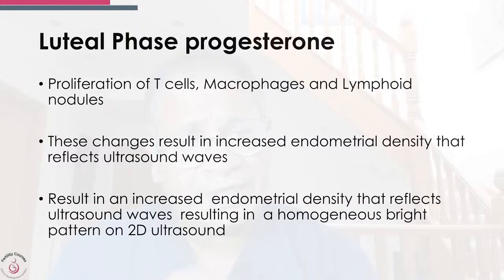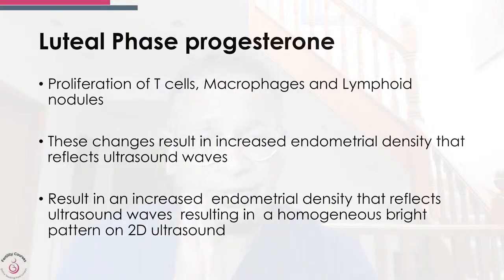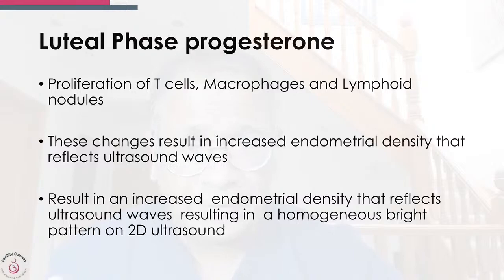Progesterone has a very interesting effect on the endometrium. It starts preparing the endometrium to accept a pregnancy through proliferation of T cells, macrophages, and lymphoid nodules. These changes result in increased endometrial density that reflects ultrasound waves very differently from the trilaminar pattern. You start seeing a larger density, giving a slightly different appearance — a homogeneous bright pattern which is seen on 2D scan.